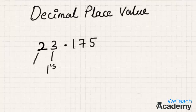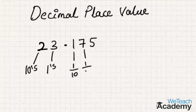2 is in the tens place. In the decimal part, 1 is in the 1/10th place, 7 is in the 1/100th place, and 5 is in the 1/1000th place.